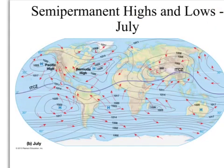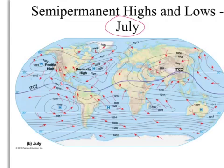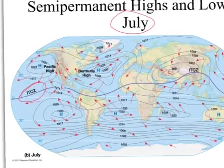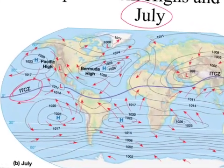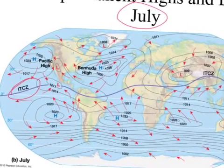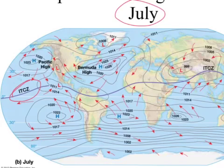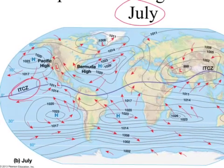Here's July. It looks like the same map at first, but look closely — it's different. Check out the intertropical convergence zone on the purple line. You might already see that it has moved north from where it was.